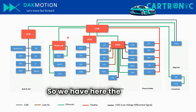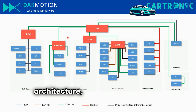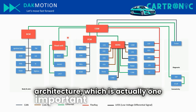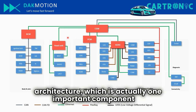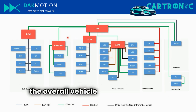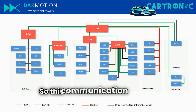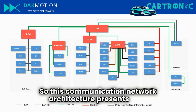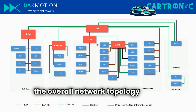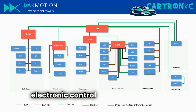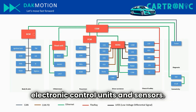We have here the vehicle communication network architecture, which is one important component of the overall vehicle electric/electronic architecture. This communication network architecture presents the overall network topology of the vehicle, made of different components, different ECUs — electronic control units — and sensors.